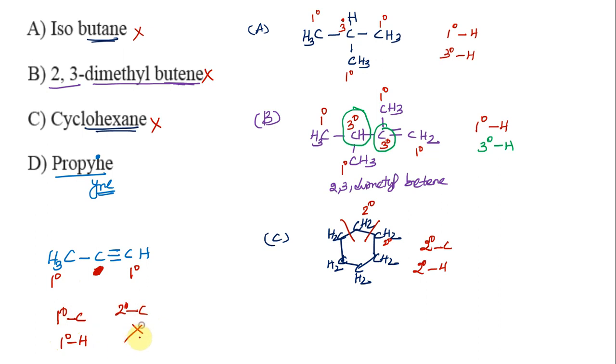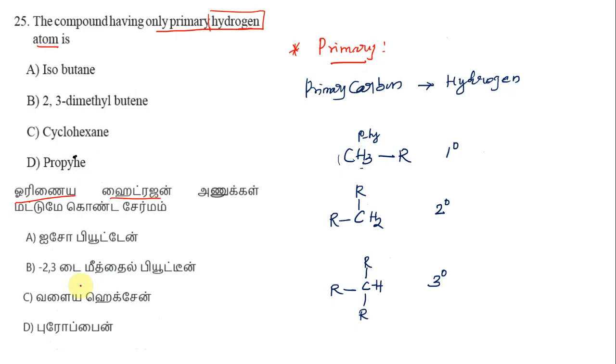So the primary hydrogen is present only in propyne. Propyne is the correct answer.